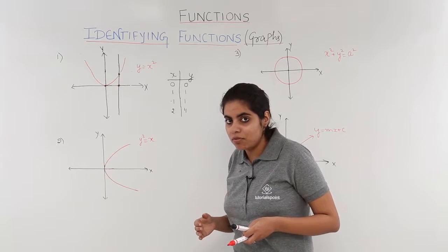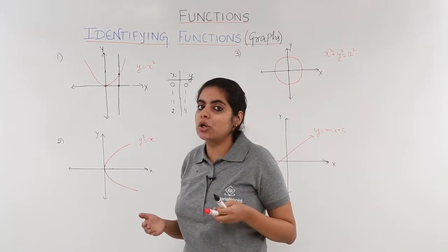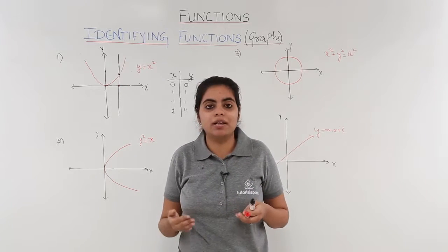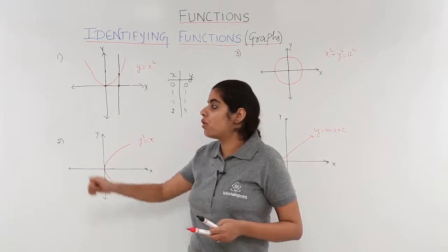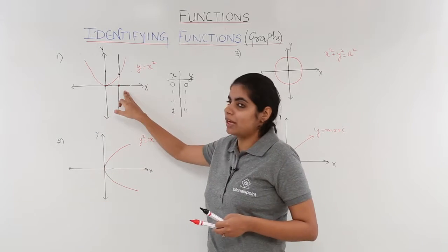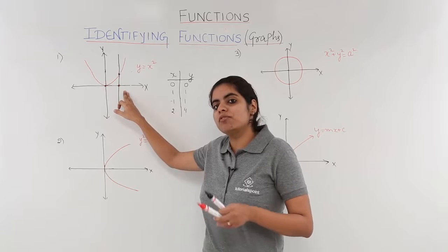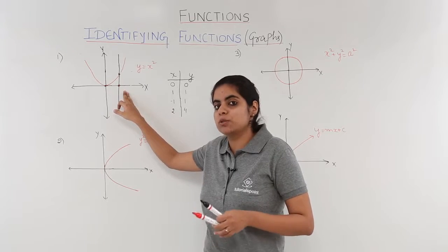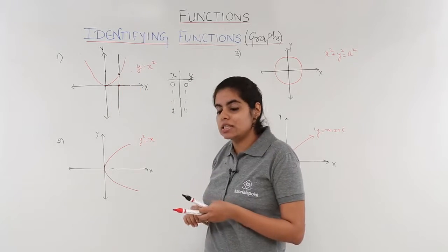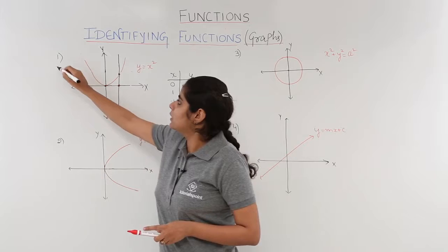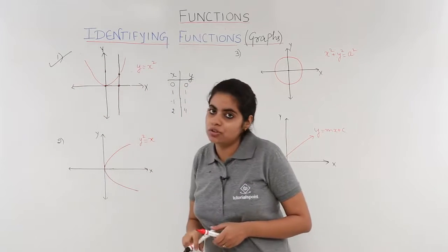So for a graph, we basically draw a line parallel to the y-axis and then for a particular value of x, if only one value of y is present, then we say it is a function. So this example of y equals x squared is a function.